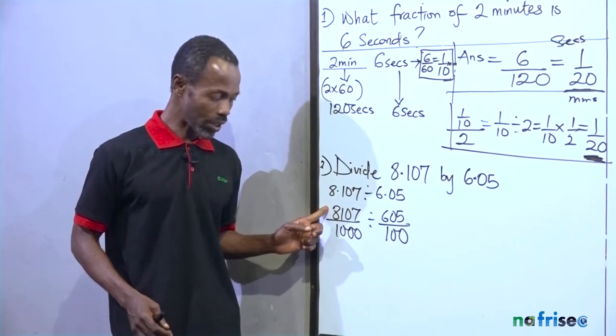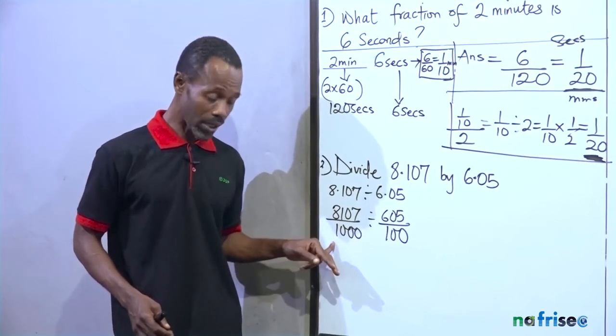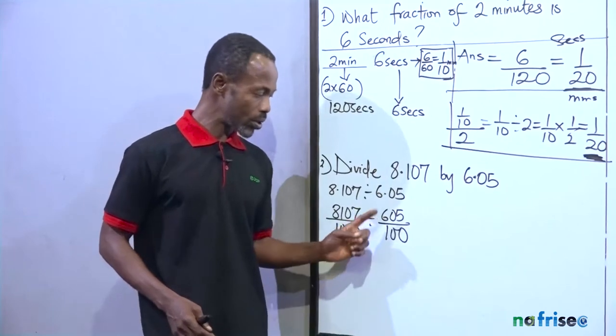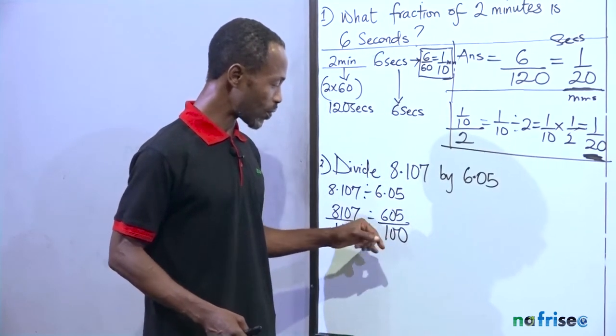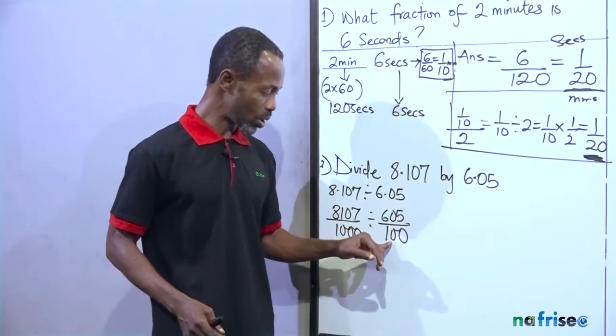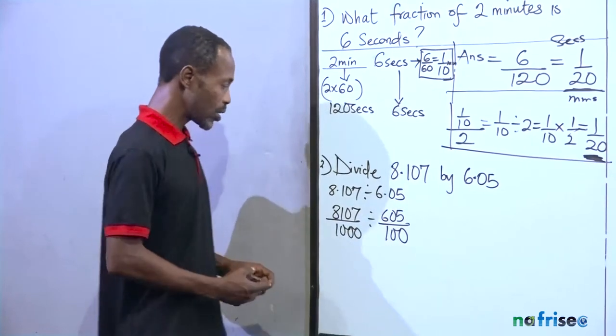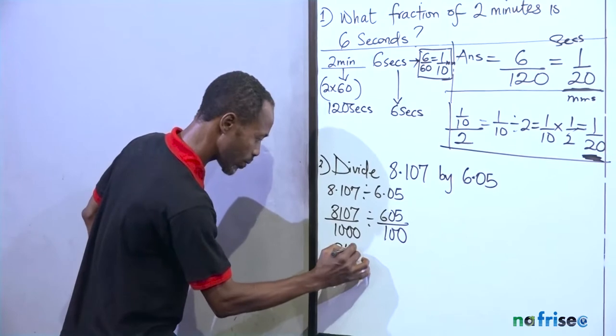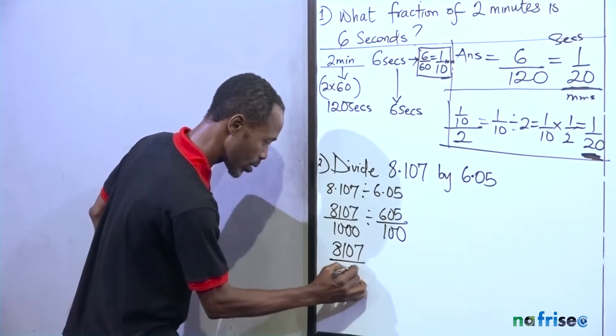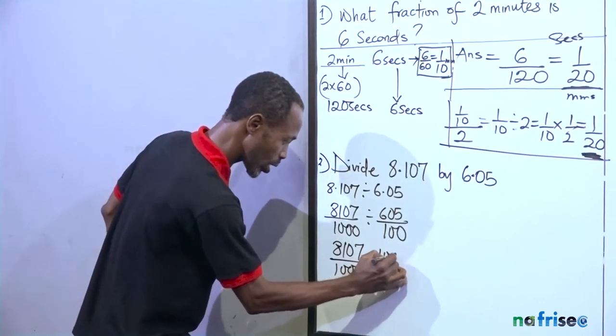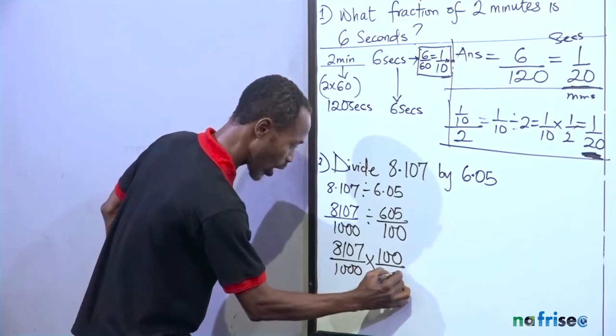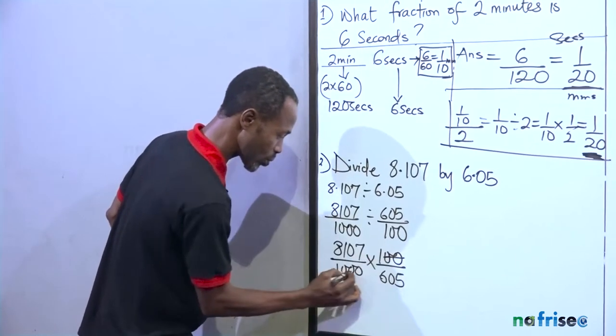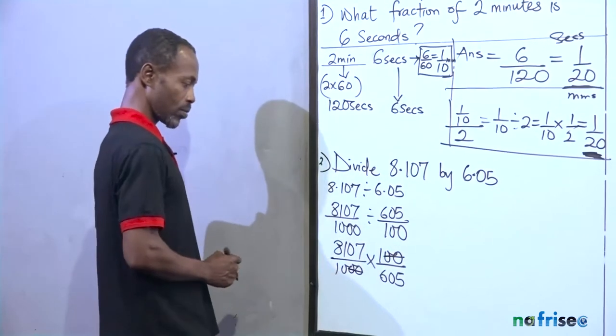The numbers after the decimal point will take the numbers of zeros you will have after the first one. So it becomes 8,107 divided by 1,000. In the second one, 6.05 will give us, because of the two decimal points, you are going to have two zeros. And to change division to multiplication,